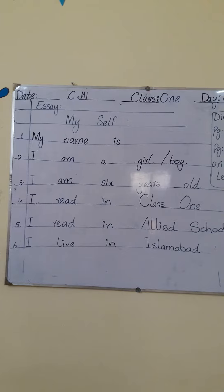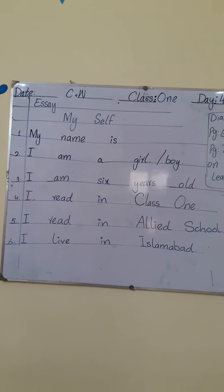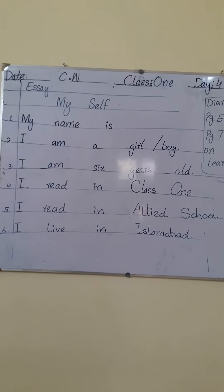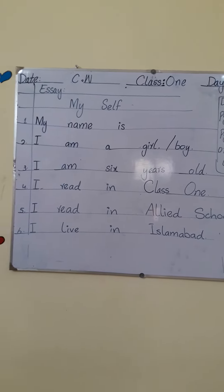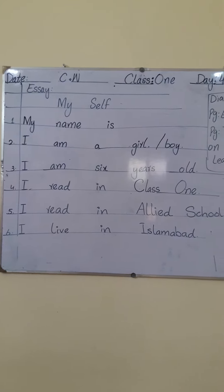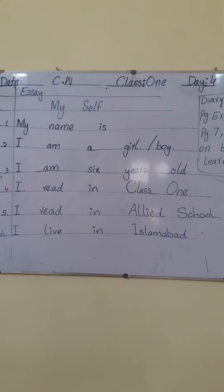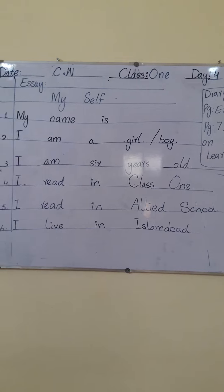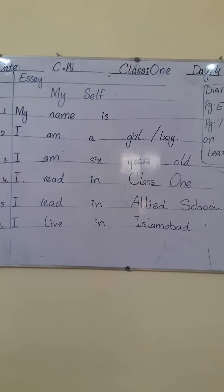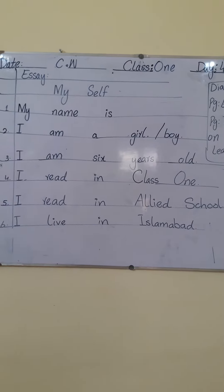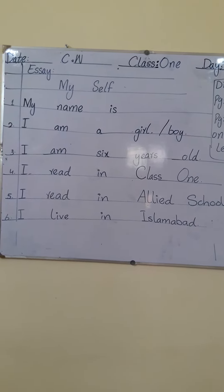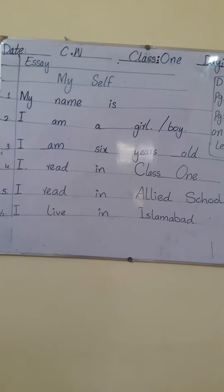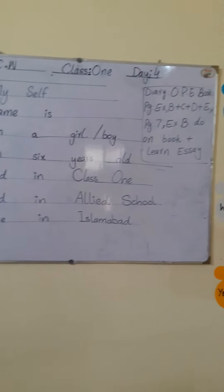For the second point: I am a boy, or I am a girl. I am six years old. I read in Class 1 — write 'C' capital, 'O' capital. I read in [your school name] and I live in Islamabad. Note down this essay.